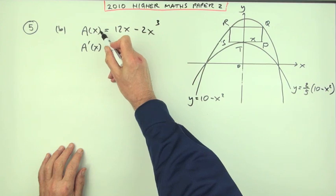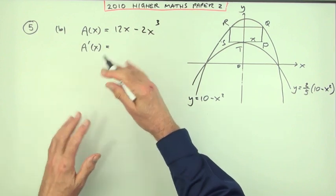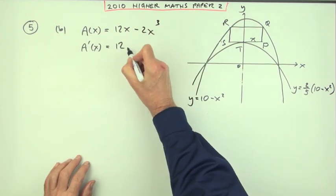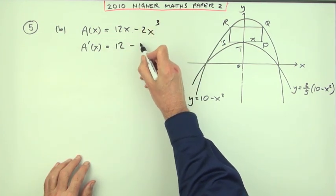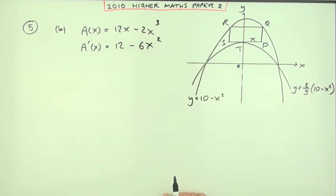Since it's in this functional notation, I'll just write it down this way. You could write dA by dx if you like, but this would actually be more appropriate. Not that it matters. Differentiate. So that just becomes a 12. Multiply by the power. Multiply by 3. That'll be 6 times 1 of the power, 6x squared.